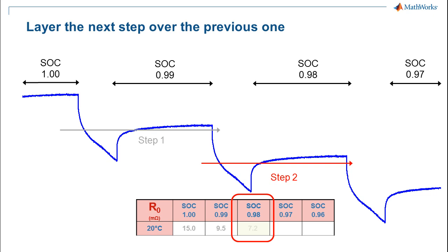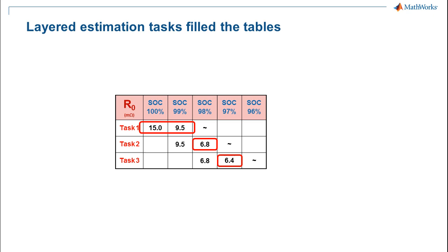Another way to look at this is that we're exercising only certain table values during each step because of the SOC range that is used in each pulse. So in task one, we're primarily exercising just the first two columns of SOC. Then in task two, we're exercising the second and third columns. However, we don't need to tune the second column again since step one fully covered the portion of the data that exercised that value.